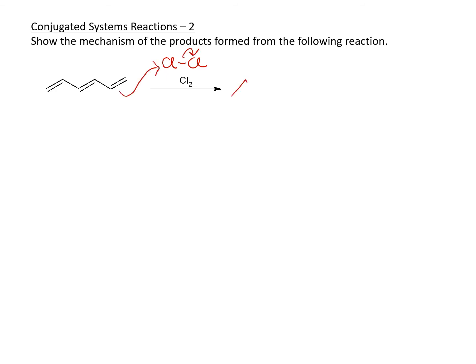The first one that we have is this. Form the carbocation ion as stable as possible. So that's your first compound that's possible. This one can now undergo resonance. So you will have that.